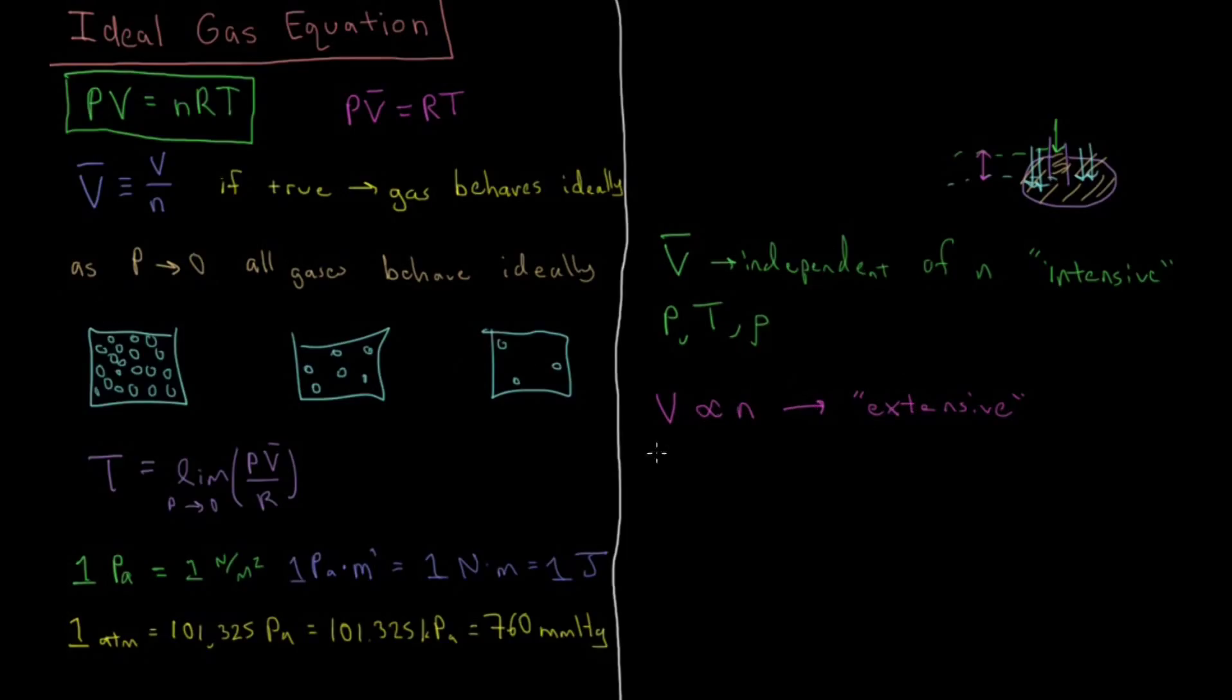So some other examples of some extensive properties that we come across. The number of particles, obviously. As the number of particles increases, the number of particles increases. So that one's true by definition. The total mass of the system. So if we have twice the amount of gas, then we have twice the mass. And if we have twice the number of particles, we will have twice the energy in there, provided they're at the same pressure, temperature, etc. Alright, so that's intensive and extensive properties, and those are going to be important to keep in mind for some applications later on.